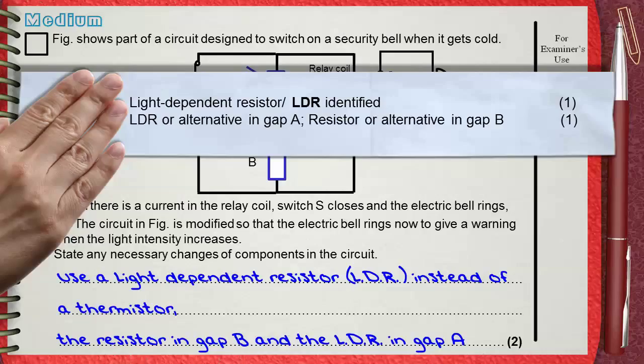Instead of resistor, you can say a variable resistor or a rheostat. Anyway, whatever you say, this will be in Gap B. And this is the second mark.